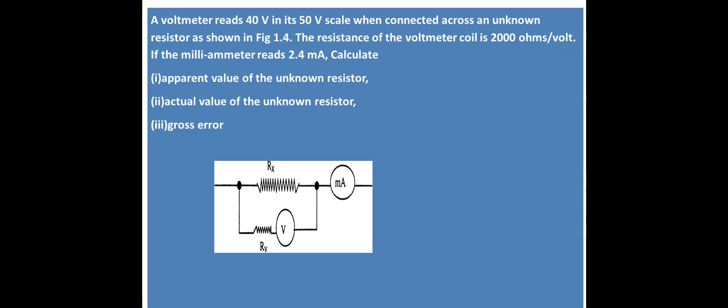Good morning students, today we are going to discuss this problem. A voltmeter reads 40 volts in its 50 volt scale when connected across an unknown resistor as shown in this figure. The resistance of the voltmeter coil is 2000 ohms per volt. If the milli-ammeter reads 2.4 milliamps, calculate the apparent value of unknown resistor, actual value of the unknown resistor, and gross error.